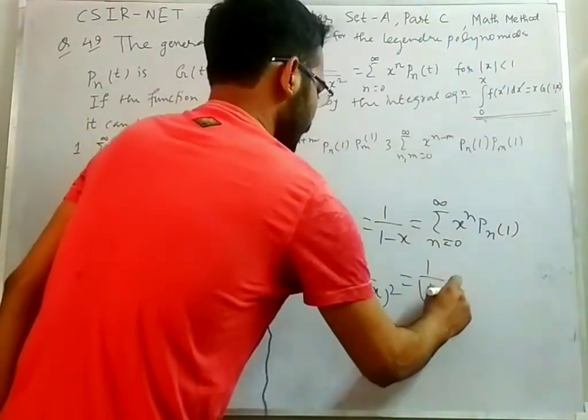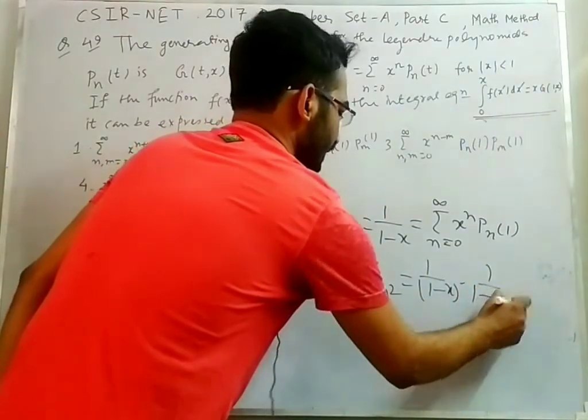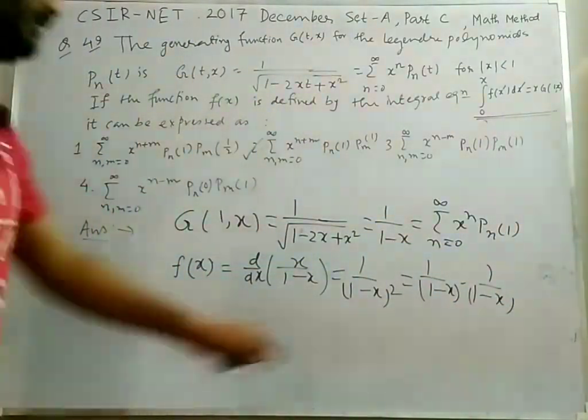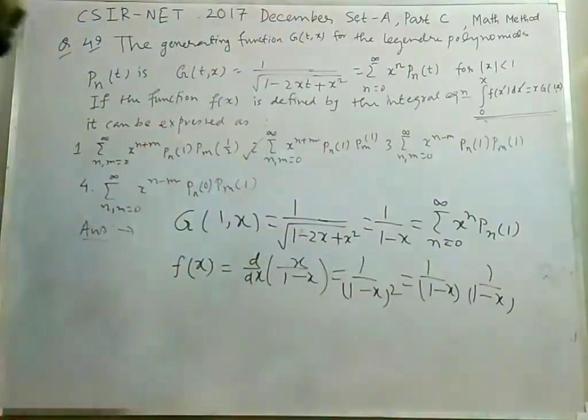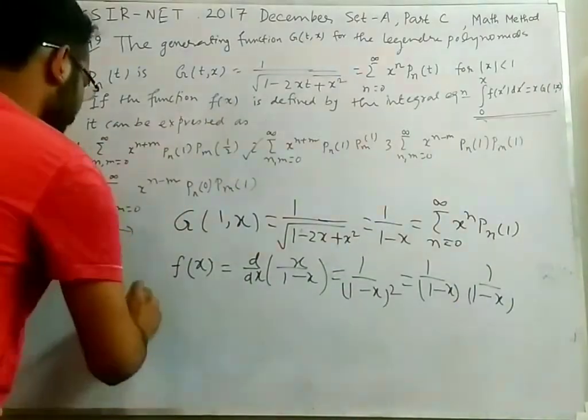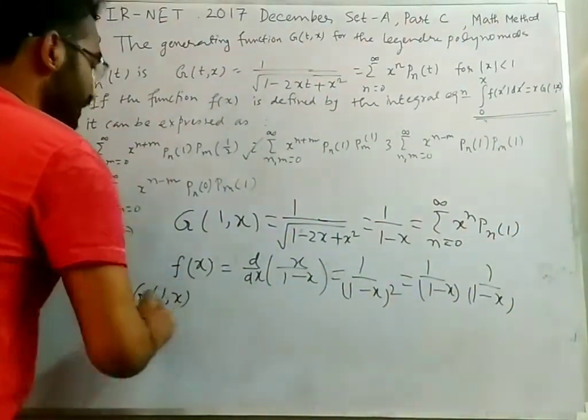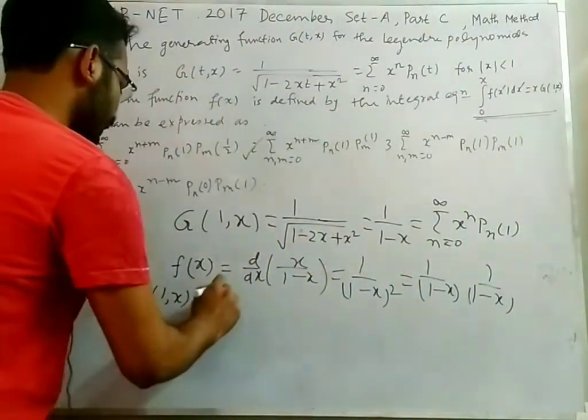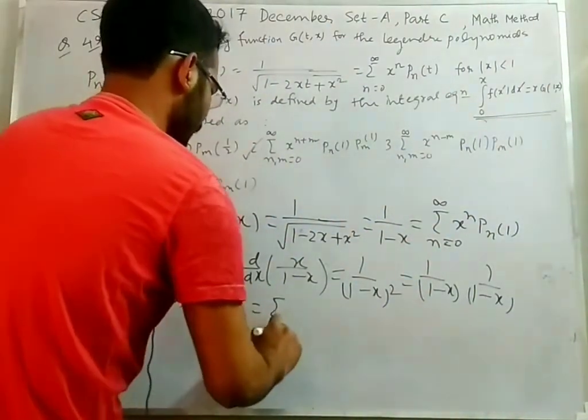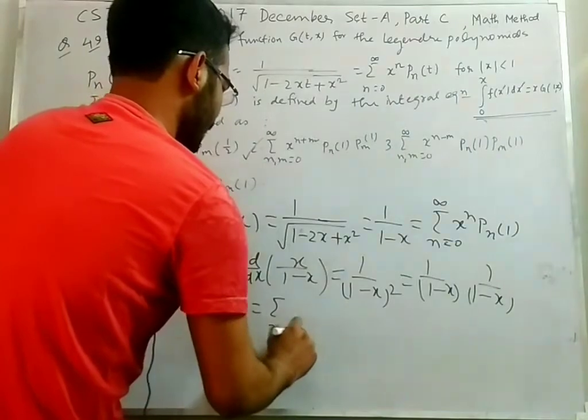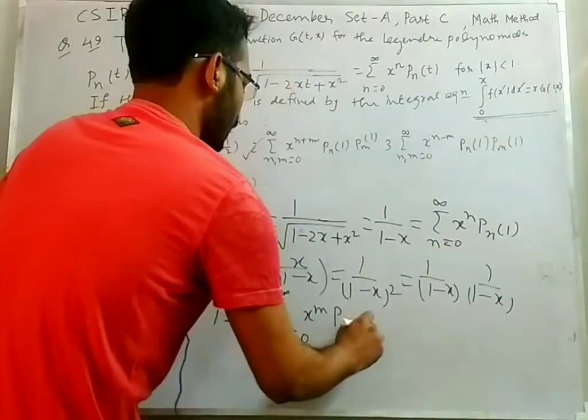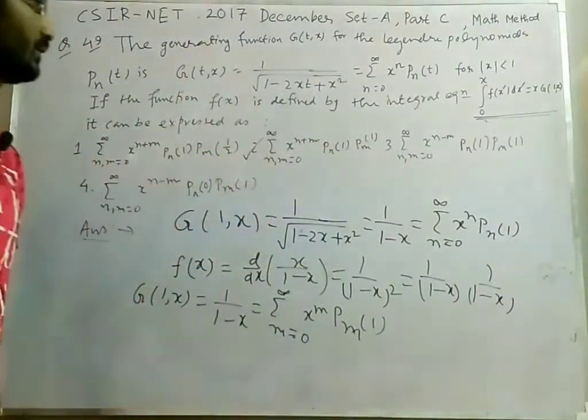Now this is into. We are writing this equation or relation in another form, in terms of m. 1 by 1 minus x, that equals in terms of m, sum from m equals 0 to infinity x to the power m times p_m of 1.